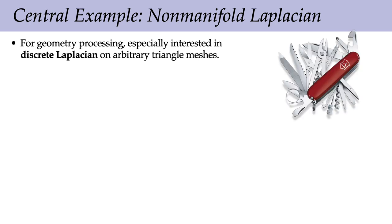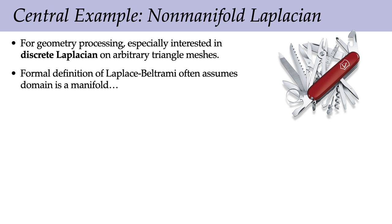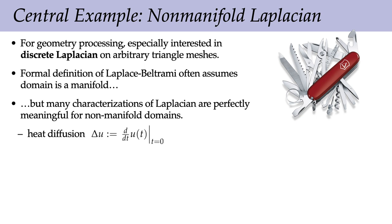If we want to do geometry processing on general meshes, one very important object is a discrete Laplace operator, which turns out to be a Swiss army knife for geometric algorithms, much in the same way that the fast Fourier transform is a Swiss army knife in traditional signal processing. Now the formal definition of Laplace-Beltrami typically assumes a manifold, but fundamentally the concept makes perfect sense even for domains that are not manifold. For instance, if you imagine welding together metal sheets in a non-manifold way, you can certainly talk about how heat diffuses through this domain, and so you could define the Laplacian from the way heat spreads over the domain at time zero.